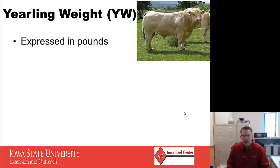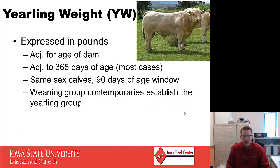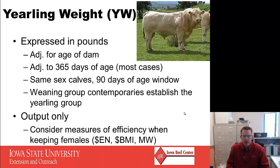Yearling weight is much like weaning weight, just further down the growth chain. It is expressed in pounds, adjusted for age of dam, and adjusted to 365 days of age. It uses the same-sex calves in a 90-day age window. Importantly, if calves were not in the same weaning contemporary group, they cannot be in the same yearling contemporary group — contemporary groups can only get smaller, not larger. It is output only; consider measures of efficiency like Dollar Energy in Angus when discussing yearling weight, especially when keeping females.